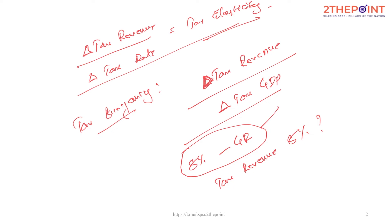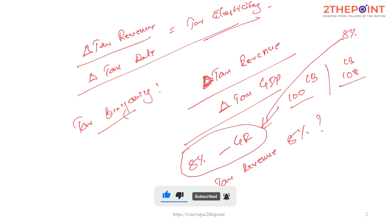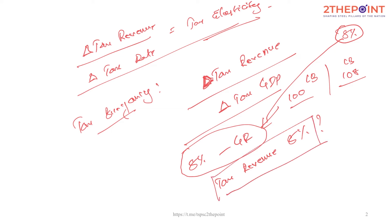Let's say last year we had 100 chocolate bars produced, and this year 108 chocolate bars produced. So there is an increase in output by 8%, and that is what I am calling the growth rate. For an 8% increase in output, would there be a corresponding increase in tax revenue? Not necessarily — that is not necessary.